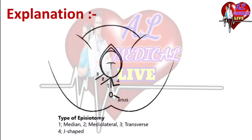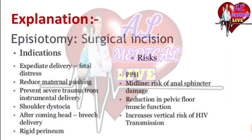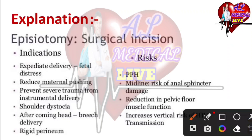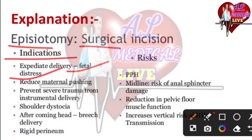Risk factor is one of the indications we have to look at. For episiotomy, we look at the surgical incision. The first indication is expected delivery and fetal distress. We have to look at fetal distress and maintain the fetus at normal.